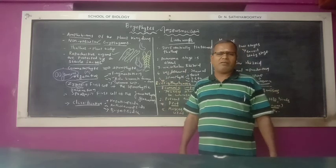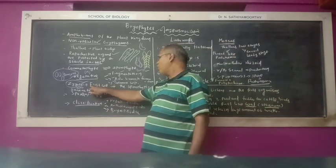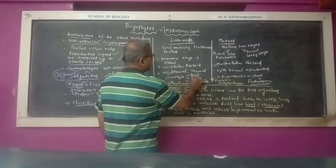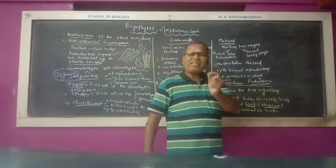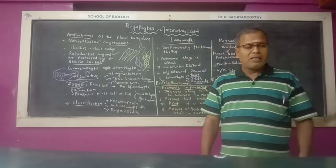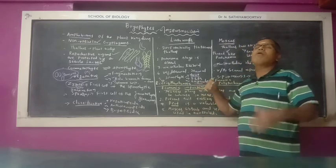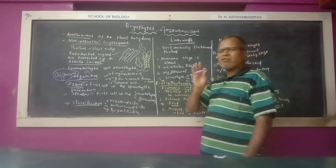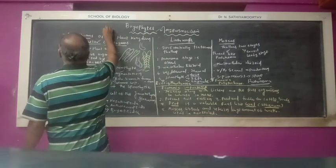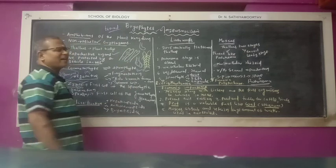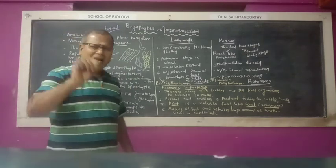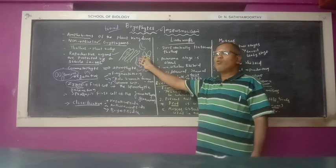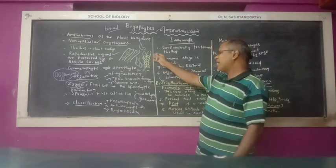The zygote undergoes mitotic cell division to form the sporophyte. The sporophyte has three parts: foot, seta, and capsule. The spore mother cells present inside the capsule undergo meiotic cell division to form haploid spores in tetrads. The spore is the first cell of the gametophytic generation. On germination, the spore develops into a new thallus.